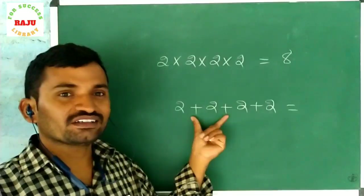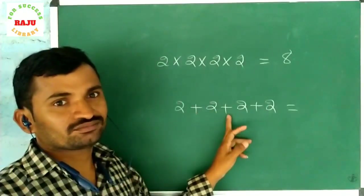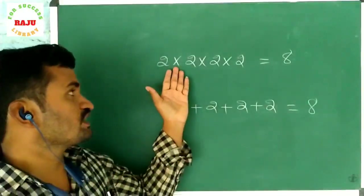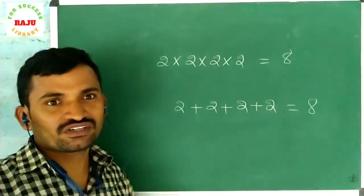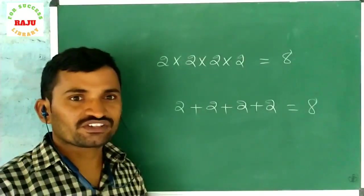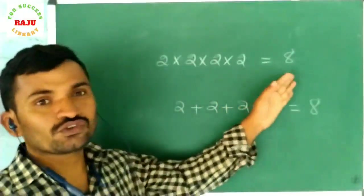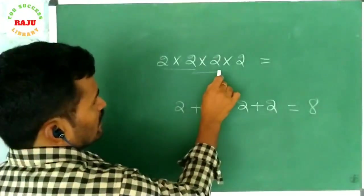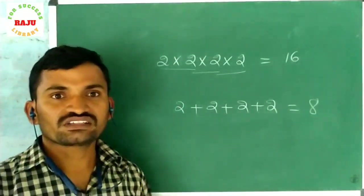Here, two is repeated — how many times? Four times. But what is the sign? Here, plus is there — that is repeated addition, so the answer is eight. But here, what is the sign? It is not plus — it is multiplication, repeated multiplication. So two into two into two into two is not eight. Two times two is four, four times two is eight, eight times two is sixteen. So the answer is sixteen.